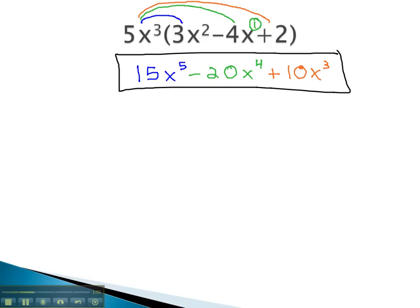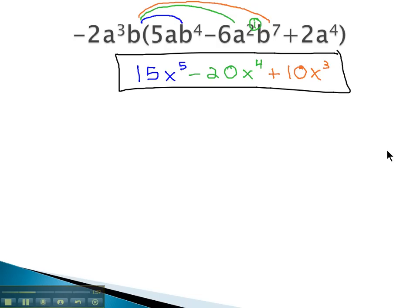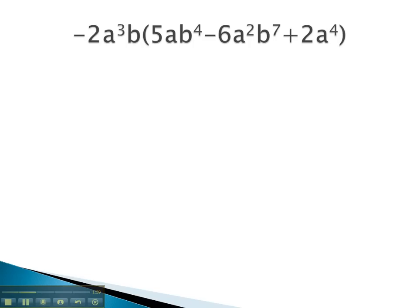Let's try one more example, one that's got a few more variables. Again, the process and pattern is still the same. We're going to distribute the negative 2a³b onto the following polynomial.